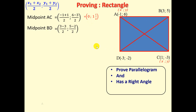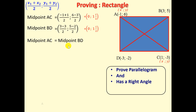Now let us find the midpoint of diagonal BD using the same midpoint formula. We have (3 - 3) / 2 and (5 - 2) / 2. (3 - 3) = 0 over 2, which gives 0. (5 - 2) = 3 over 2, which is 1 and a half. The midpoints are the same, so the midpoint of AC equals the midpoint of BD. Conclusion: ABCD is a parallelogram.